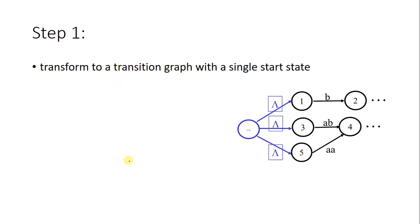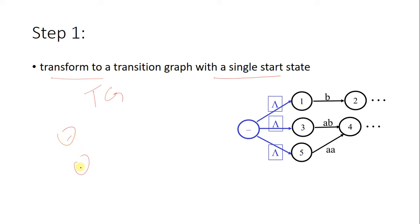In Step 1, because in a transition graph there is the possibility of more than one starting state and more than one final state, we transform the transition graph to have a single start state. If you have multiple start states, we transform them into a single start state with null transitions, because null means free — you can move from one state to another without any input.